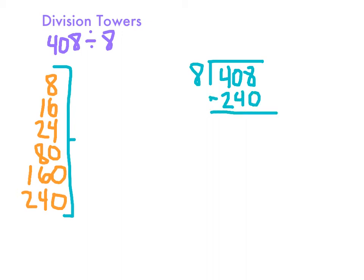We're going to subtract that from 408. I need to figure out how I got from 8 to 240. Well, down here on my multiple tower, I know I did times 30, so I'll put 30 up here at the top. Then I subtract and get 168.